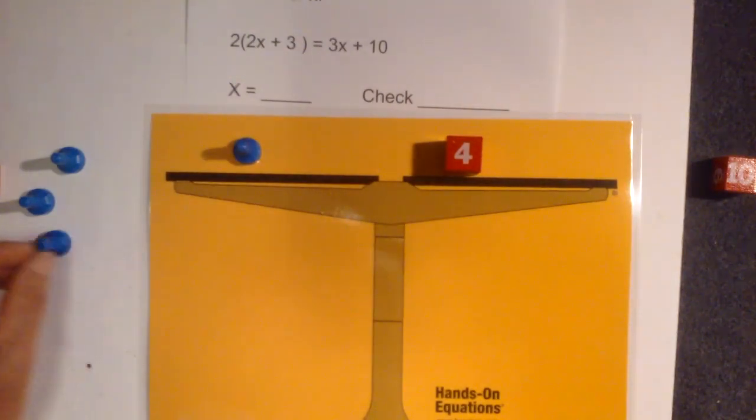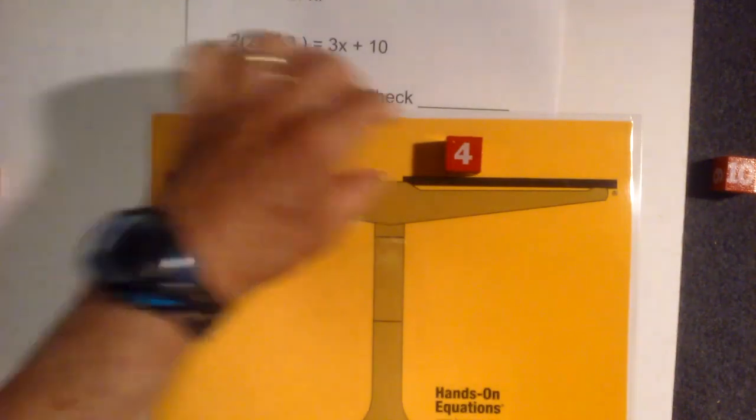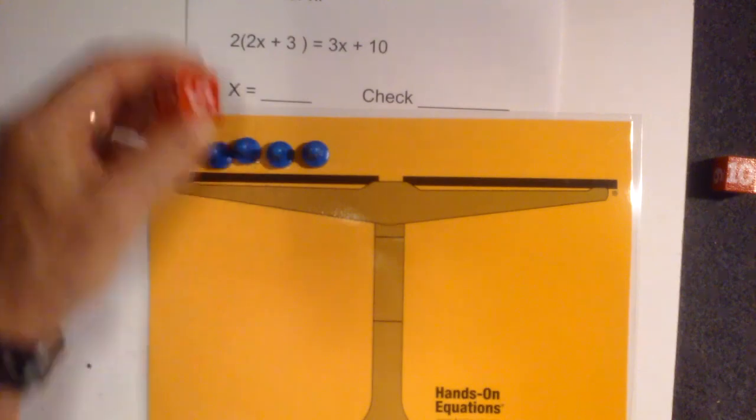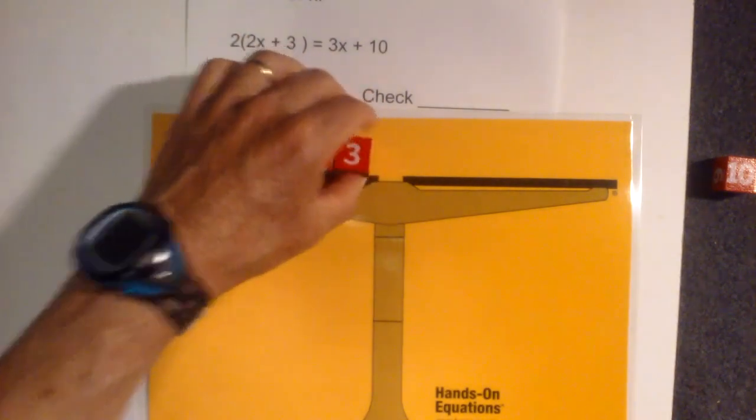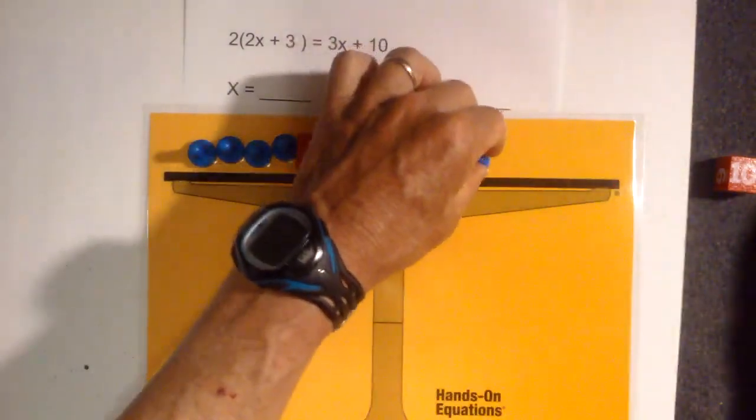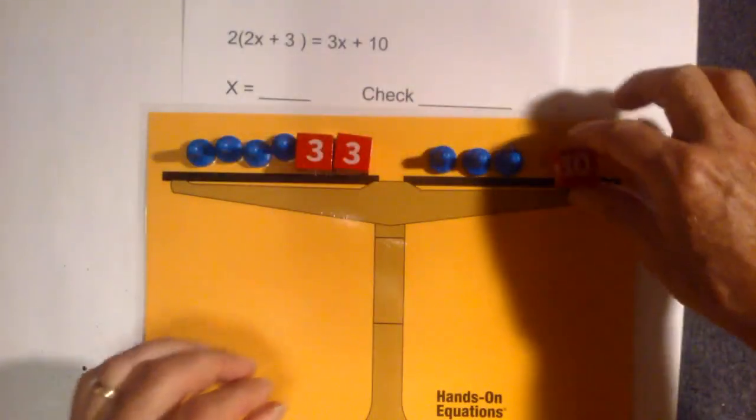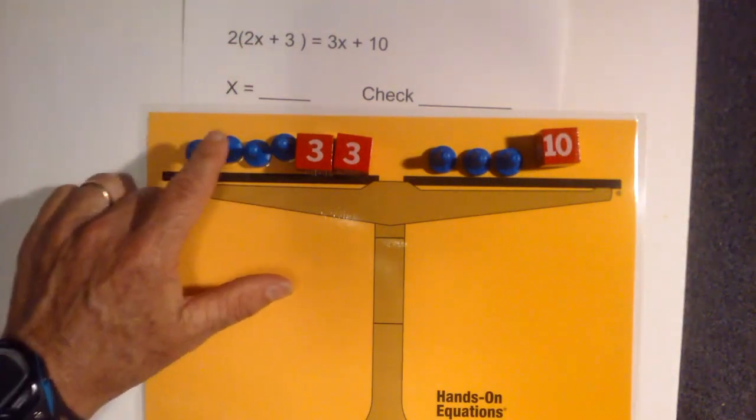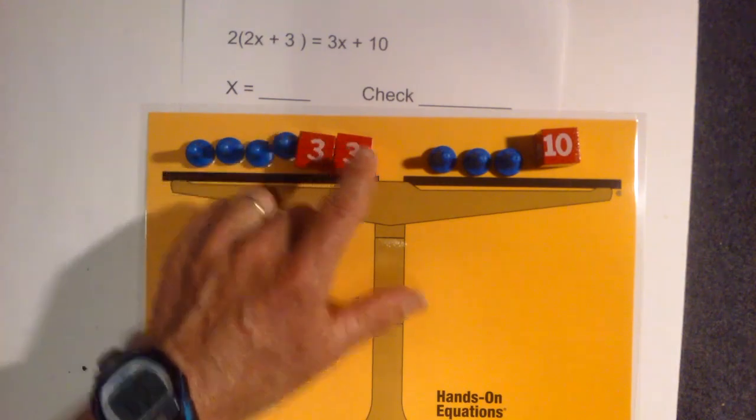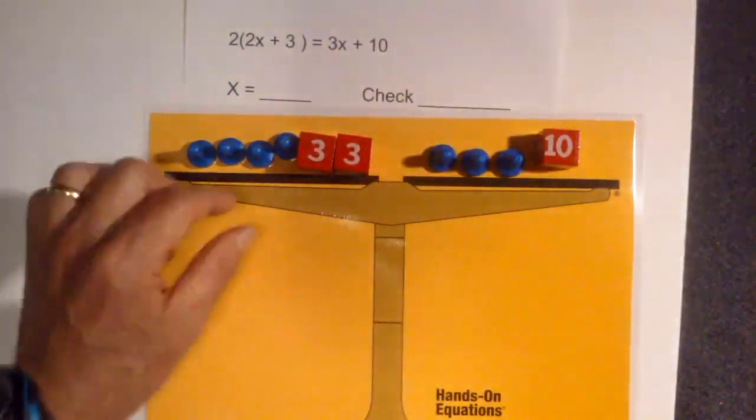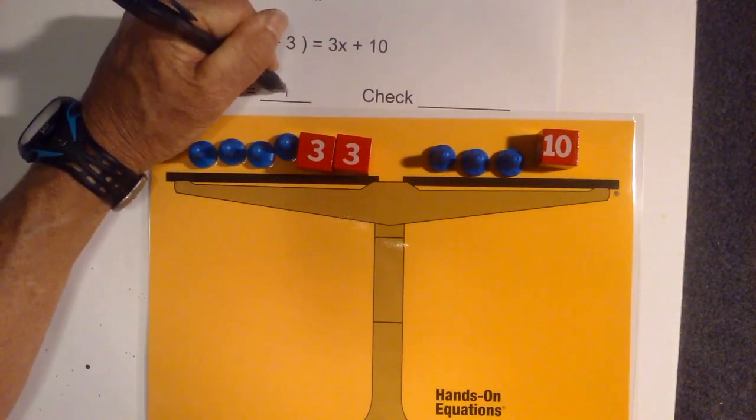So I need to set my original equation up again. So I have 4x on this side, and then I had two threes. And then on the other side we had 3x and 10. Let's check that we have 2x plus 3, two times, so there's 2x, 3, 2x, and 3, and then we had 3x and 10. So now I need to check our work and the answer was 4.